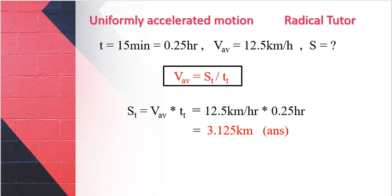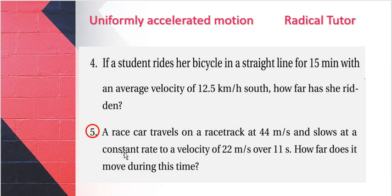Next problem: A race car travels on a race track at 44 meters per second and slows at a constant rate to a velocity of 22 meters per second over 11 seconds. How far does it move during this time?